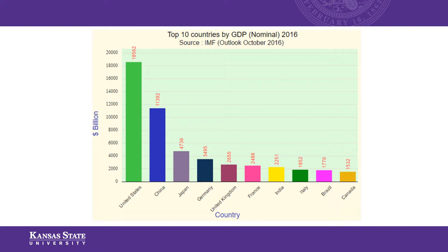Data on gross domestic product does vary slightly from source to source. The large international organizations that compile this information include the IMF — the International Monetary Fund — the World Bank, the United Nations, and the CIA, all of which put together annual lists. Depending on what source you're using, you might find slightly different numbers.